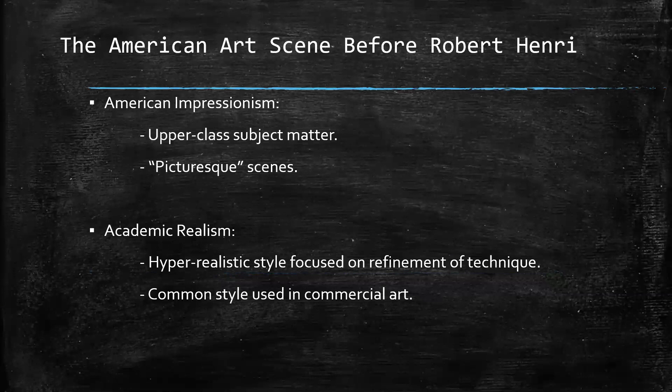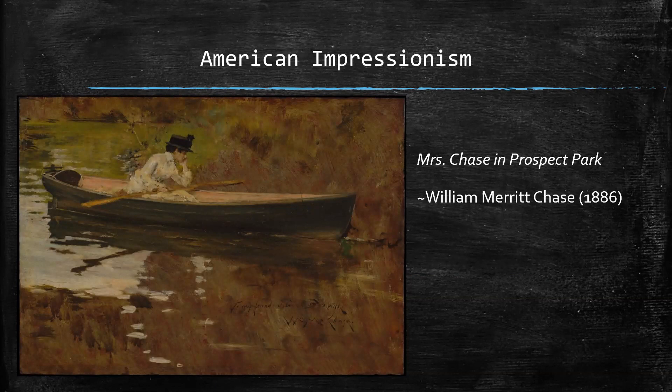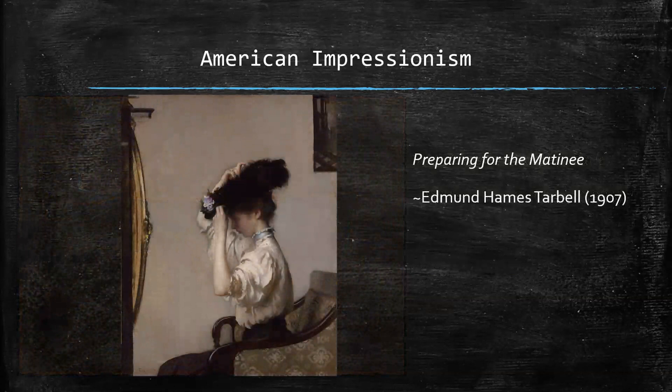Here we have an example of American Impressionism. This is Mrs. Chase in Prospect Park by William Merritt Chase in 1886. We can see the very strong impressionistic style — on the outside, a lot of broad brushstrokes, and on the inside, an upper-class woman doing an upper-class thing. We also have Preparing for the Matinee by Edmund Haymes Tarbell, which is a little bit less impressionistic, but still has a very upper-class subject matter.